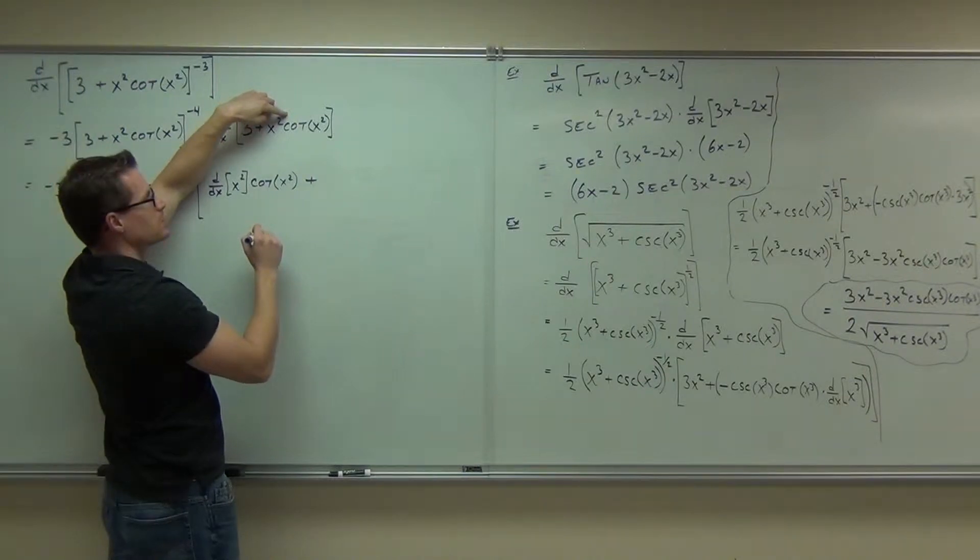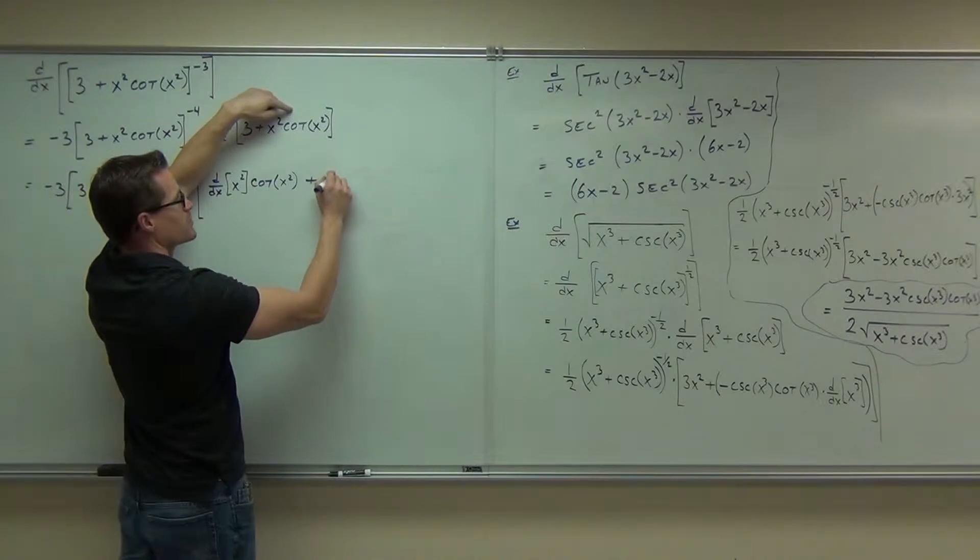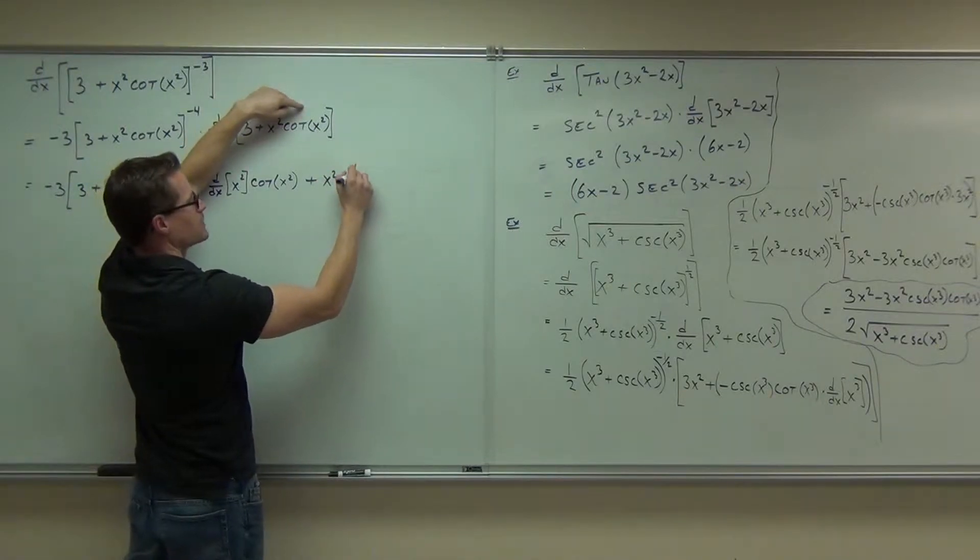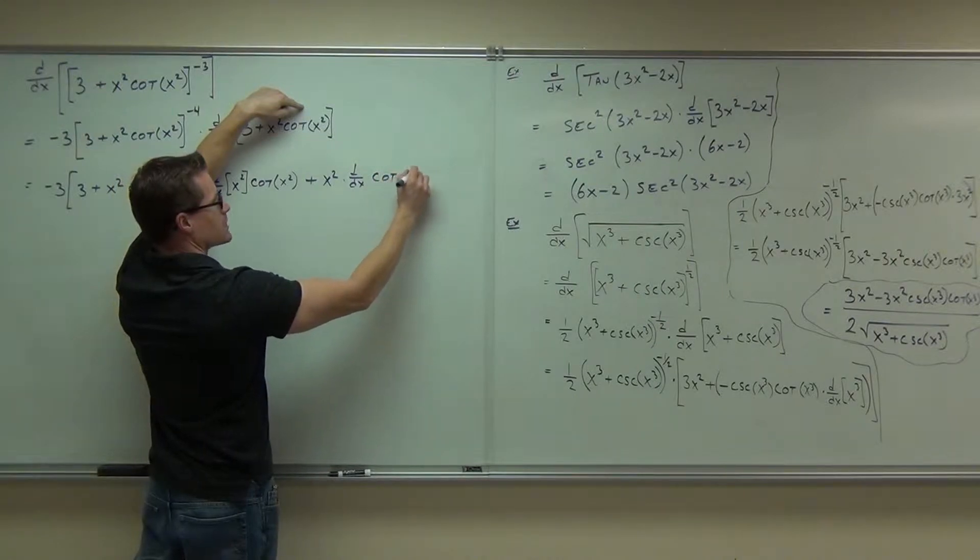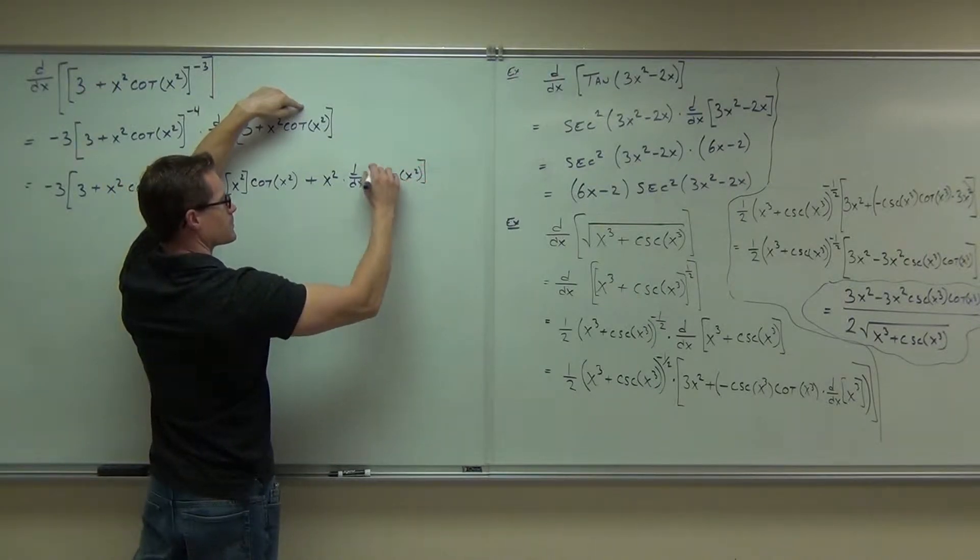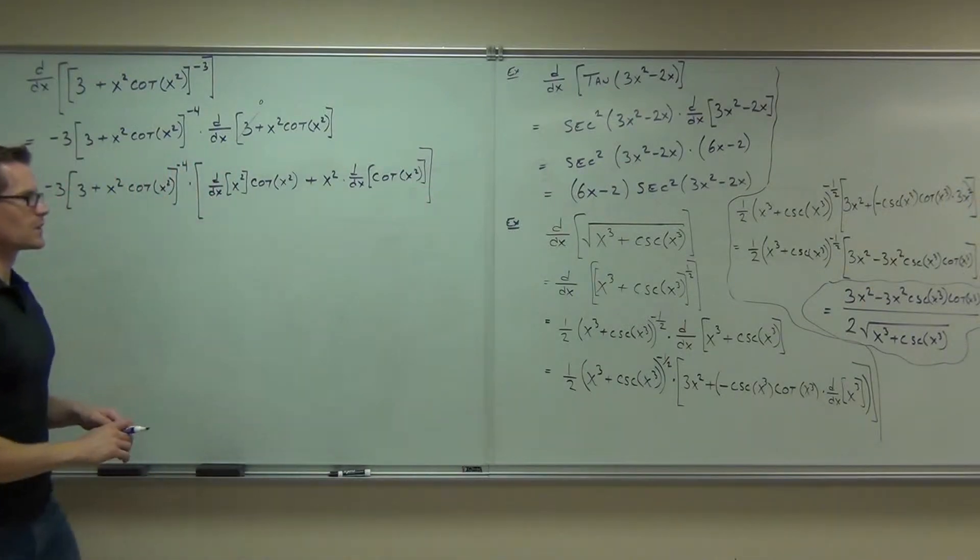Derivative of cotangent x squared. Okay, so I'm going to do x squared first. That's how I like to do it. Derivative of cotangent x squared. Finish off your bracket.